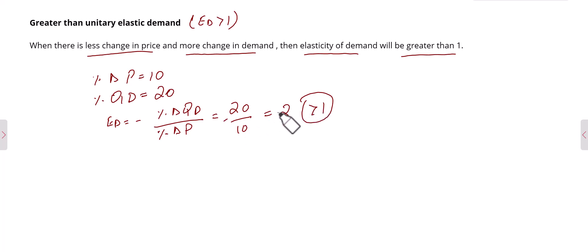In case of greater than 1 elasticity, the demand curve will always be flatter. Price, quantity demand. If let's say this is our initial price which is P1 and this is our new price which is P2. So there is less change in price and there is more change in quantity demand. So in this case our demand curve will be flatter.